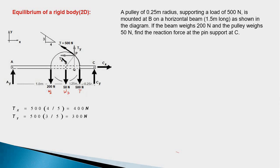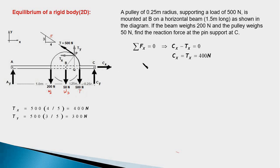Let us find the magnitude of Tx and Ty — the horizontal and vertical components of this tension force. We know the slope is three upon four, so the hypotenuse of the triangle is five. Therefore Tx equals 500 times four upon five, which works out to 400 newtons. Likewise, Ty equals 500 times three upon five, which is 300 newtons.